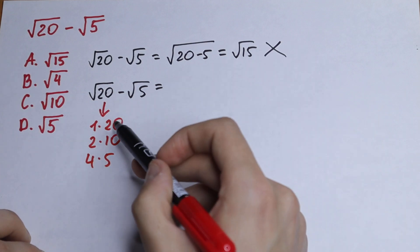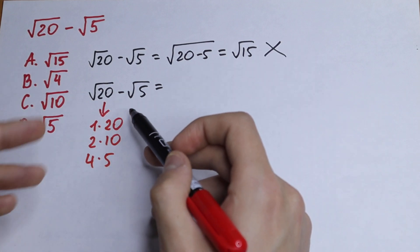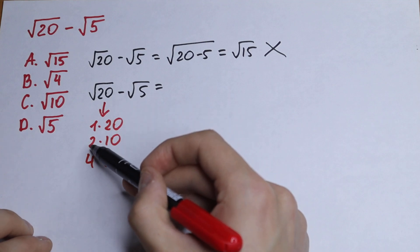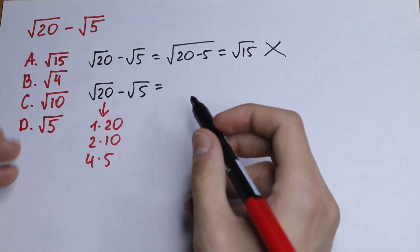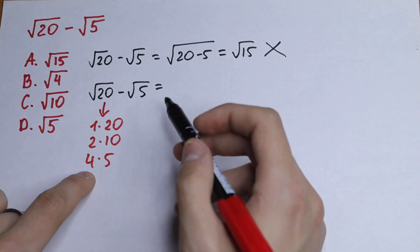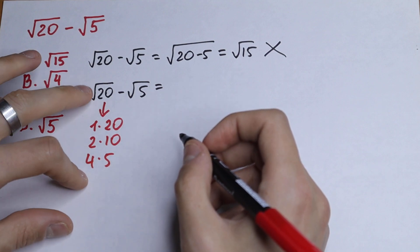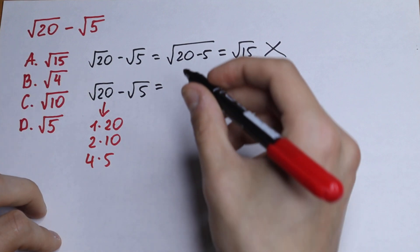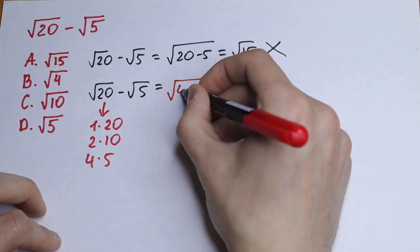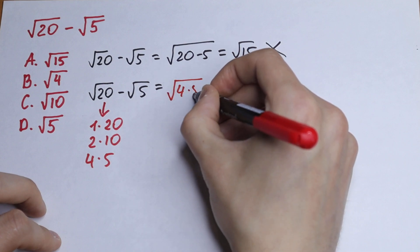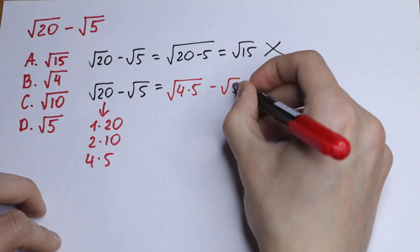We have three ways. The first (1×20) is not helpful, and 2×10 is also not useful for us. But take a look at 4 times 5. If we express 20 as 4 times 5, we will have square root of (4 times 5) minus square root of 5.